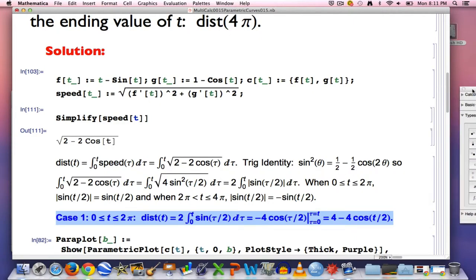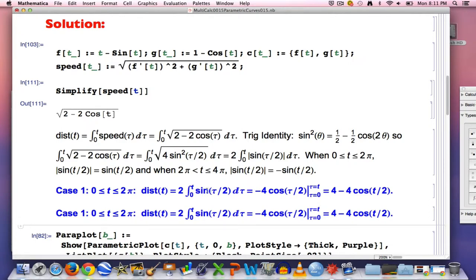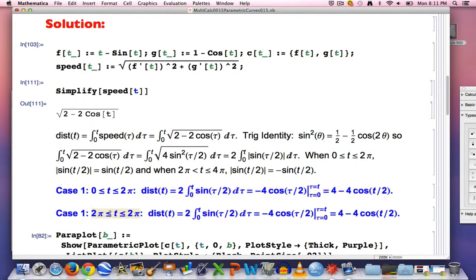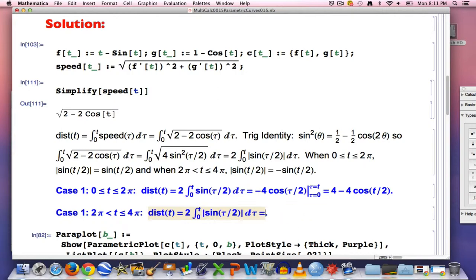How about case 2? That's trickier. By the way, if t is between 0 and 2π, then so is τ for this integral. In case 2, t is now between 0 and 4π. I need the absolute value sine back in here. Let's copy and paste this back down here. This is still true. That fact right there is true. But the rest of this does not work anymore. What you want to do is you want to split this up into the sum of two integrals.